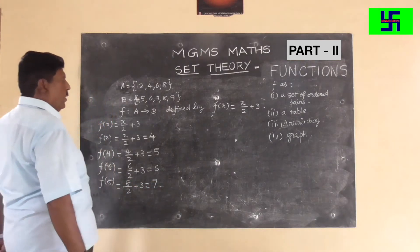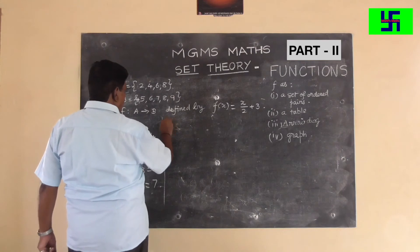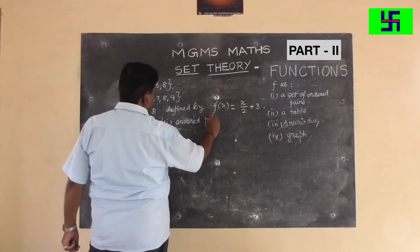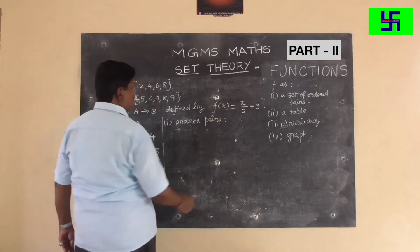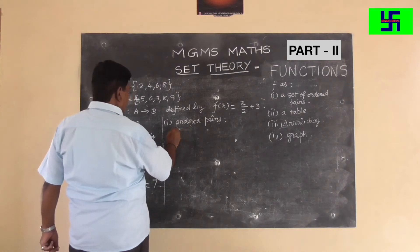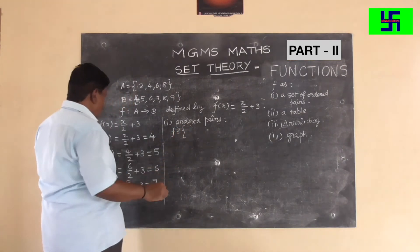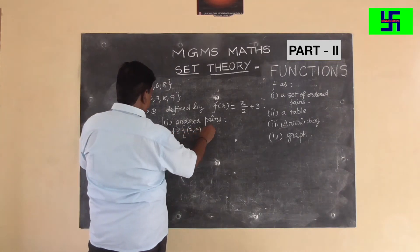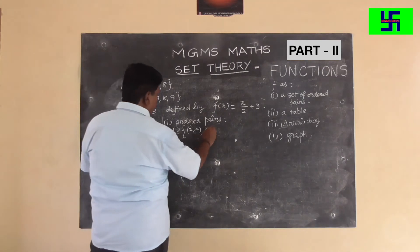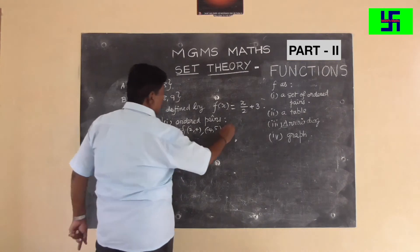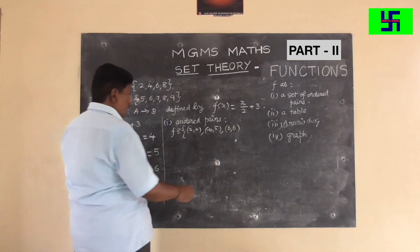So the set of ordered pairs is F = {(2,4), (4,5), (6,6), (8,7)}.